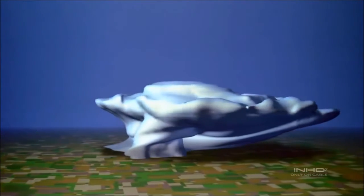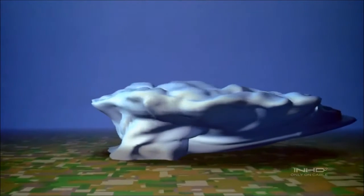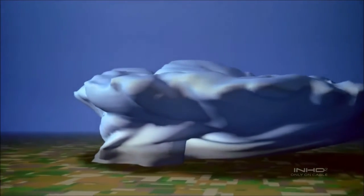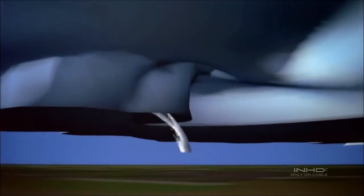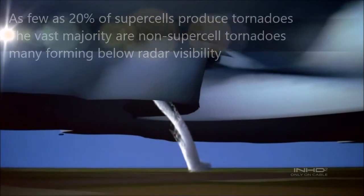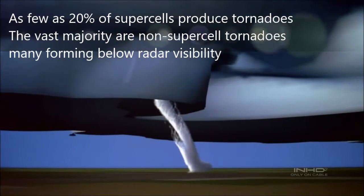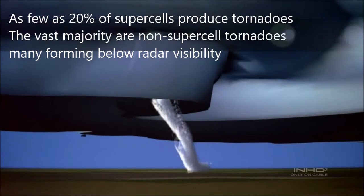Some of these storms become supercells with upward moving air and rotating winds inside them. This rotating air sometimes extends down to the ground as a tornado, picking up dust and making the funnel visible.